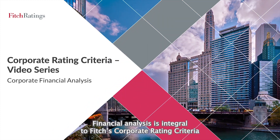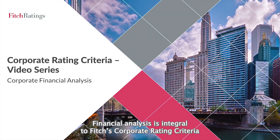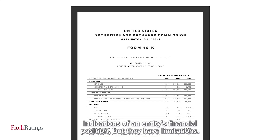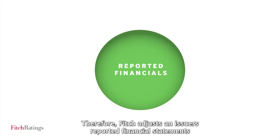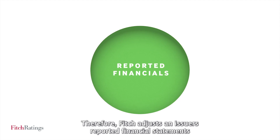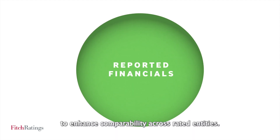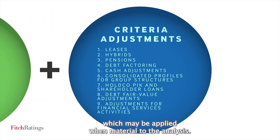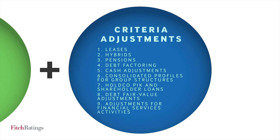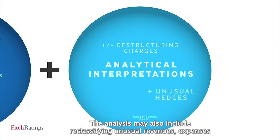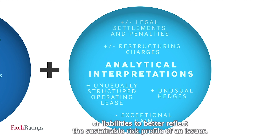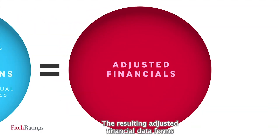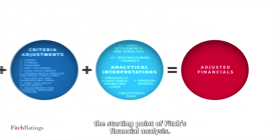Financial analysis is integral to Fitch's corporate rating criteria. The reported financial statements are a source material providing broad indications of an entity's financial position, but they have limitations. Therefore, Fitch adjusts an issuer's reported financial statements to enhance comparability across rated entities. The corporate rating criteria details nine main adjustments which may be applied when material to the analysis. The analysis may also include reclassifying unusual revenues, expenses, or liabilities to better reflect the sustainable risk profile of an issuer. The resulting adjusted financial data forms the starting point of Fitch's financial analysis.